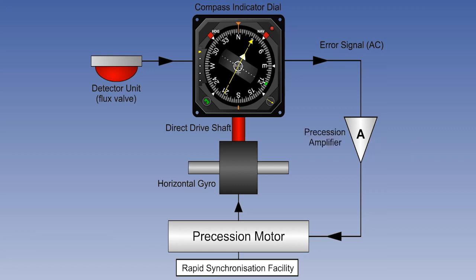This secondary induced voltage is passed to the precession amplifier, where it is amplified, phase detected, and rectified to DC. The reason for the amplification is fairly obvious, that the unamplified error signal is not powerful enough to drive the precession motor.